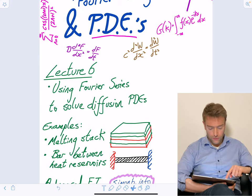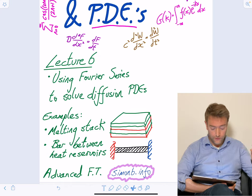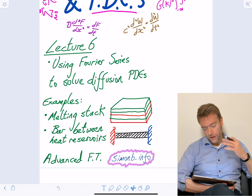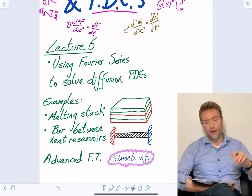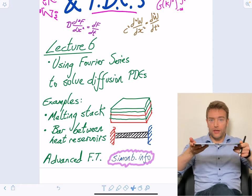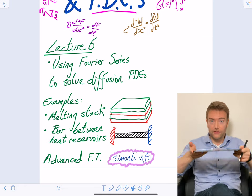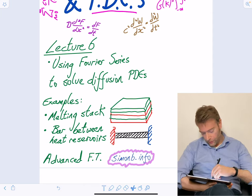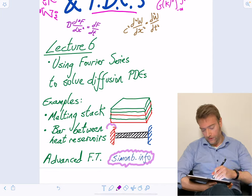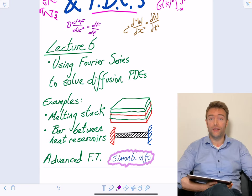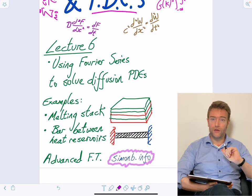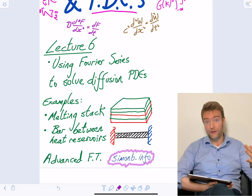Last time we met the diffusion equation, and this time we're going to be thinking about how to use Fourier series to solve pretty general diffusion problems. A couple of examples we'll especially look at are diffusion of one material system into another when we start with a stack of metal plates that are heated up so they melt into one another. Then we'll switch to a heat problem: a bar linking a hot reservoir and a cold reservoir. What will be the dynamics of the flow of heat inside the bar? And if there's time, we'll say a word about how to use Fourier transforms to level up our abilities even further.